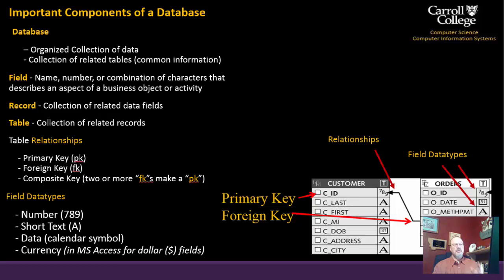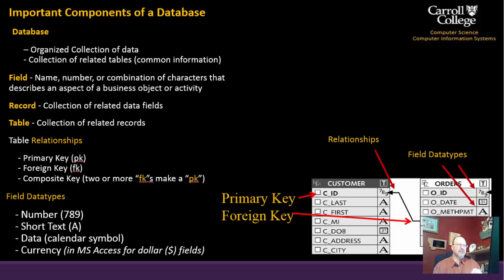Fields are the columns — like last name or first name of a customer. In a spreadsheet, those are the vertical columns of information. Records are the rows of information — all the information about you, with a student ID or customer ID as the primary key to designate that particular record.